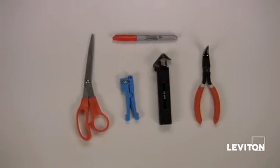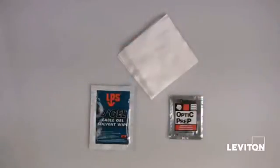To start off you'll need a red marker, a pair of scissors, the inner tube stripping tool, the outer jacket stripping tool, and a pair of needle nose pliers. You will also need D-Gel, lint free wipes, and alcohol pads.